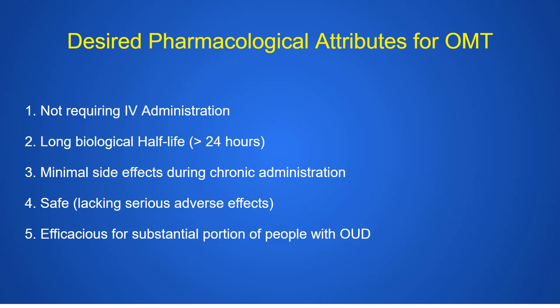What is the ideal medication for opioid maintenance therapy? It should not require intravenous administration, should have a long half-life so it stays in the blood for a long time and doesn't require frequent dosing throughout the day, should have minimal side effects, should be safe, and should work for a broad population of patients with this disorder.